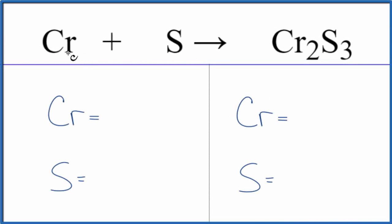In this video we'll balance the equation for Cr plus S. This is chromium plus sulfur. So first let's count the atoms on each side. We have one chromium and one sulfur. Product side: two chromiums and three sulfurs.